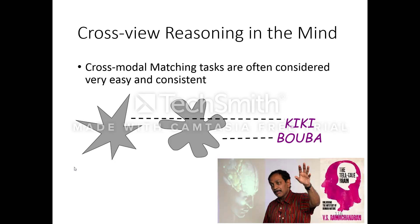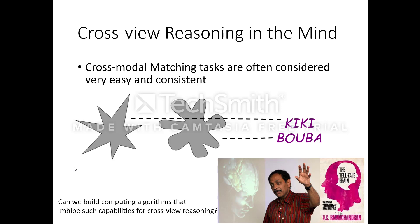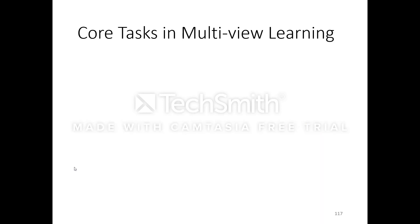This example is taken from 'The Tell-Tale Brain' by V.S. Ramachandran, a renowned neurologist who has written extensively about neurological phenomena. It is particularly interesting because it shows that humans can consistently and easily draw correspondences between images and text. A key question for the computing world is: can we build algorithms that imbibe such cross-view reasoning capabilities?